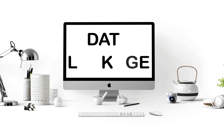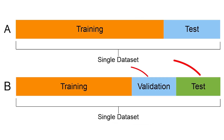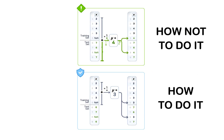Data leakage is when information from your test or validation set sneaks into your training process. It's one of the most dangerous mistakes because it gives you falsely optimistic results that fall apart in production.